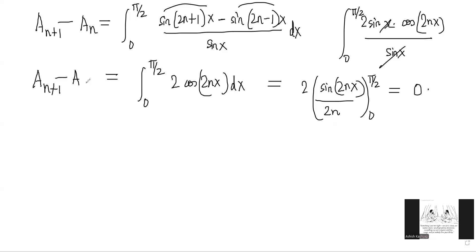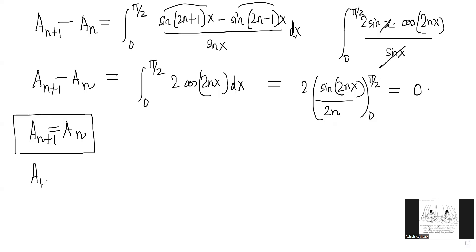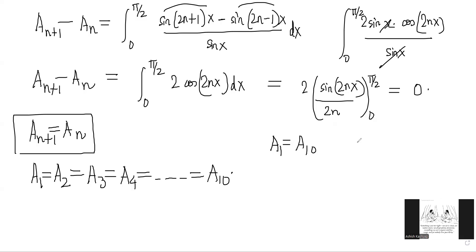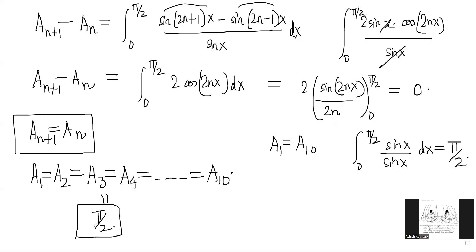Since aₙ₊₁ minus aₙ equals 0, we have aₙ₊₁ = aₙ, meaning all of the integrals are equal: a₁ = a₂ = a₃ = a₄ = ... = a₁₀. So to find a₁₀, all we need is a₁. When n=1, aₙ = integral of sin x / sin x dx from 0 to π/2, which is simply π/2. So all these integrals equal π/2, which immediately solves options 1 (a₁₀ = π/2) and 2 (a₄ = a₅). Notice how easy the question became using the difference of two successive integrals.